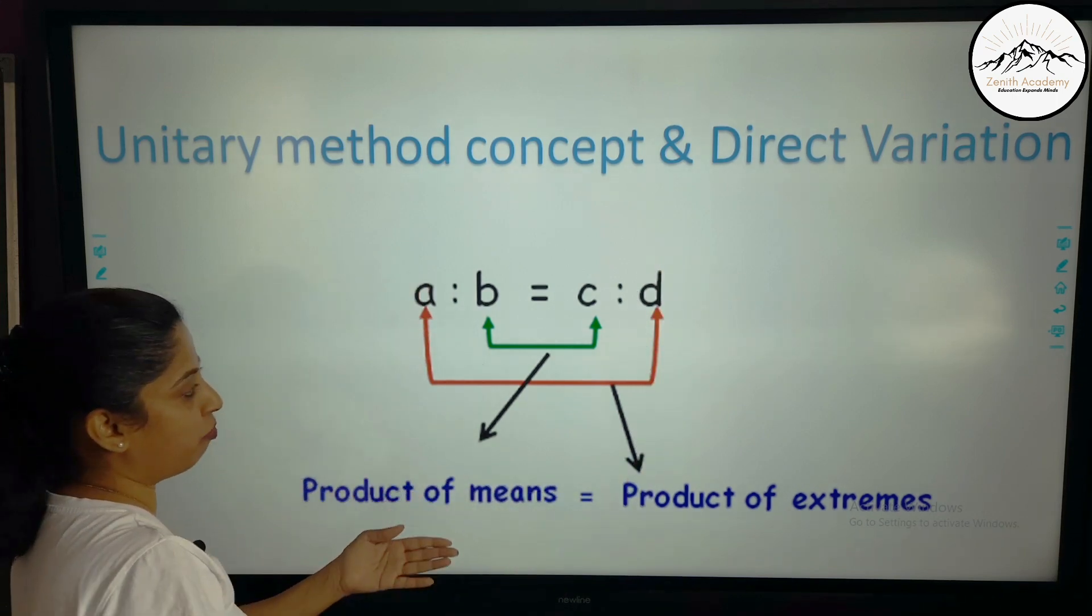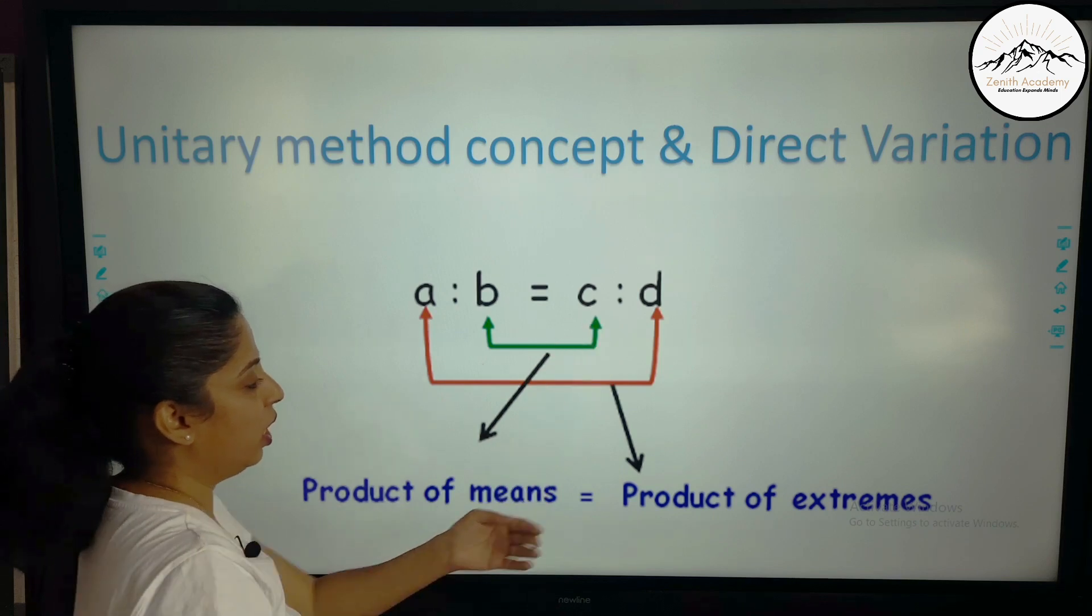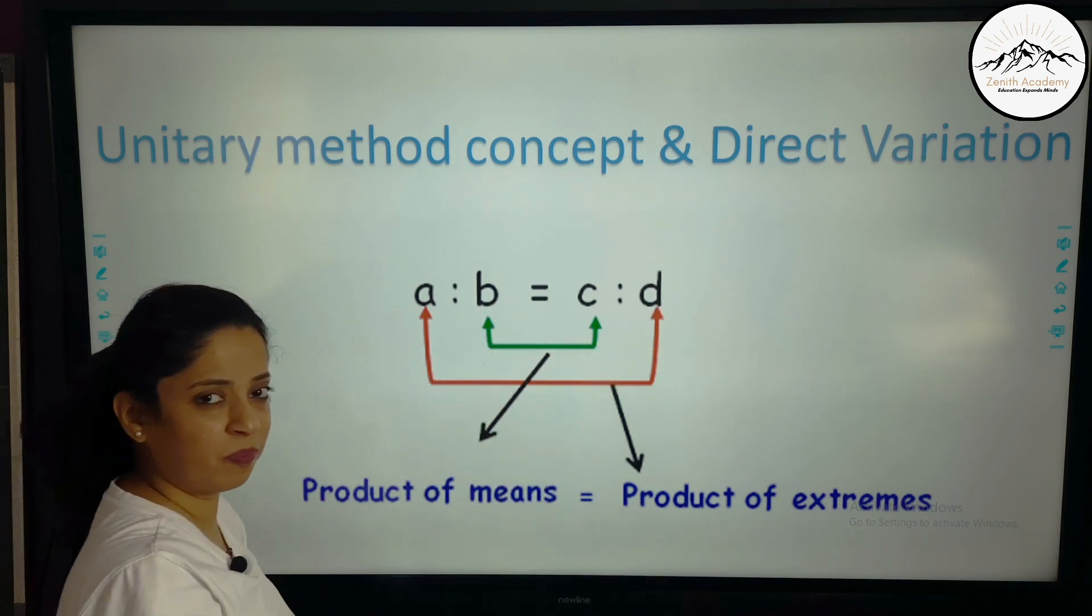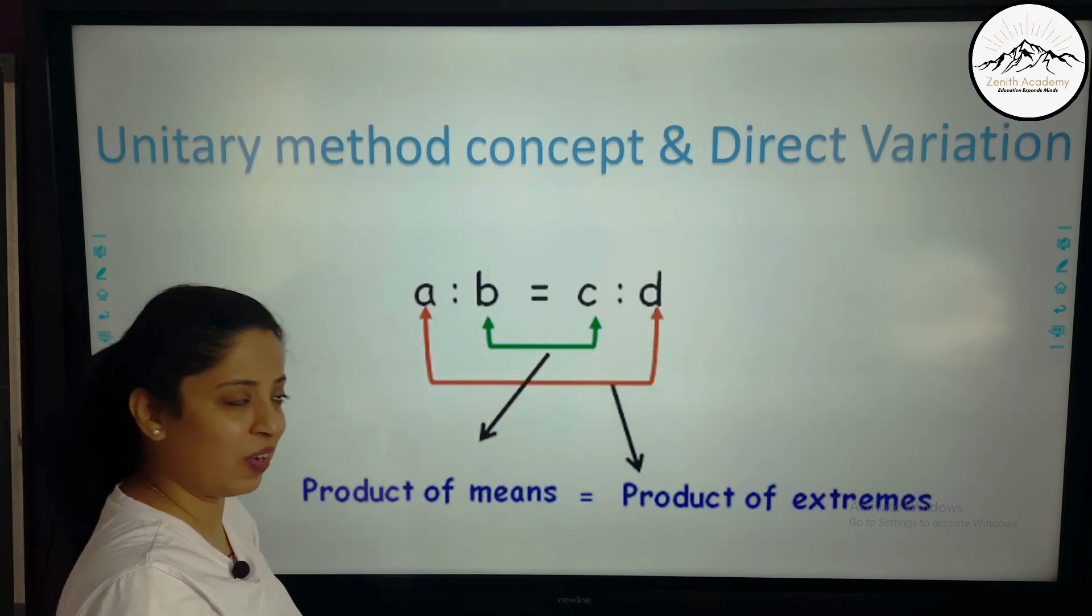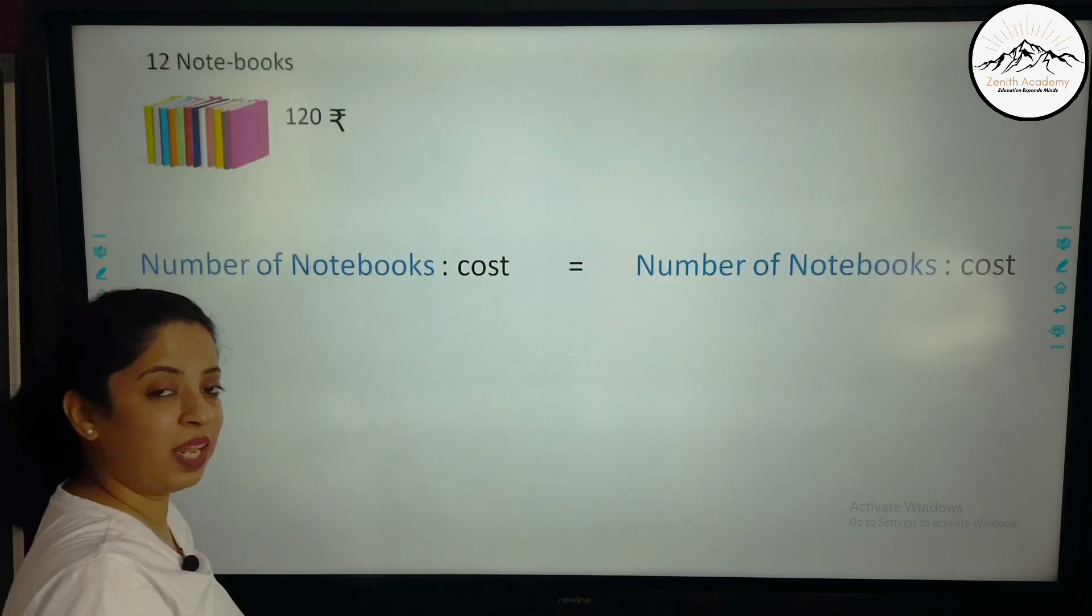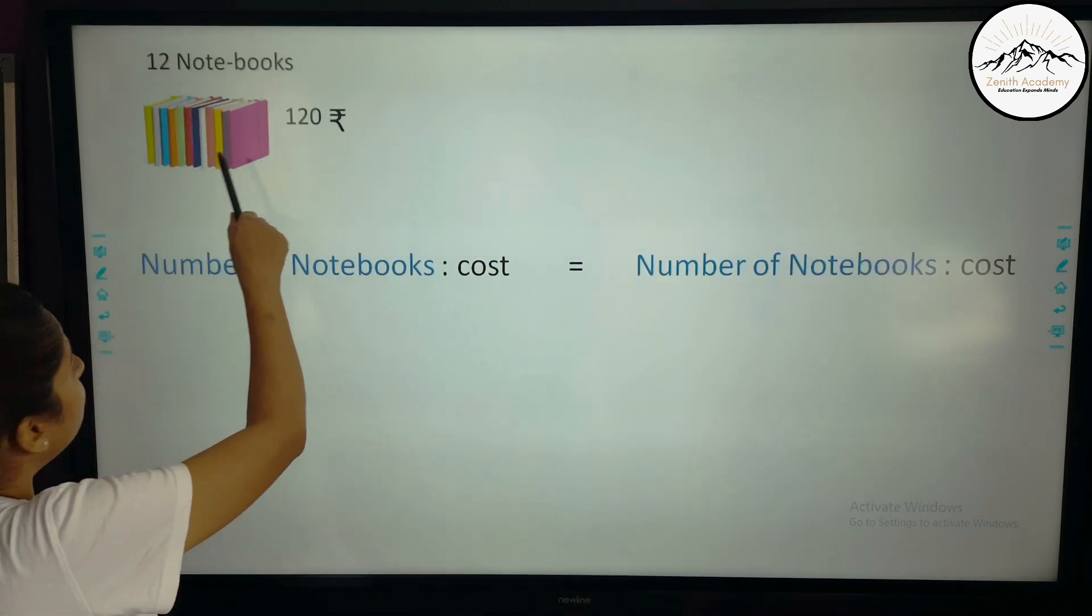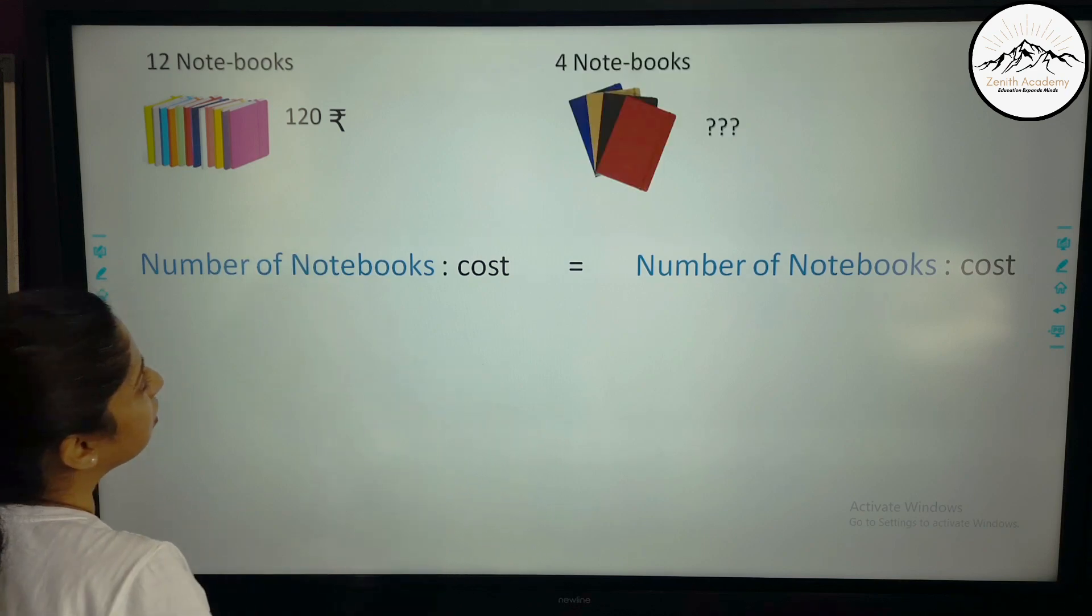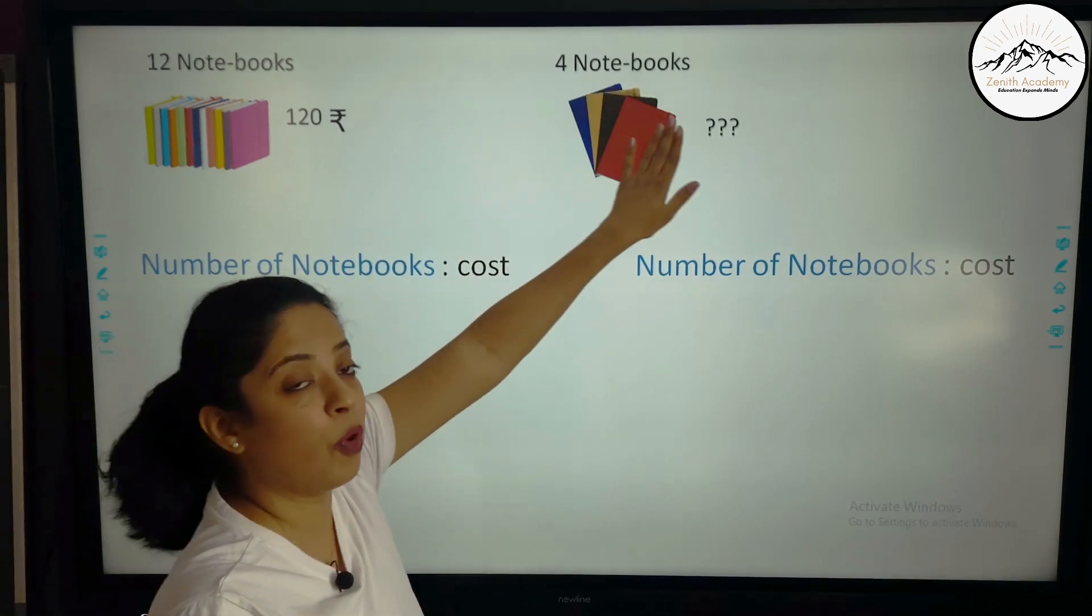So the formula says product of means that is b into c is equal to product of extreme. You didn't understand? Okay. Let me take an example and explain you. The same example. 12 notebooks cost is 120 rupees. So what will be the cost of 4 notebooks?